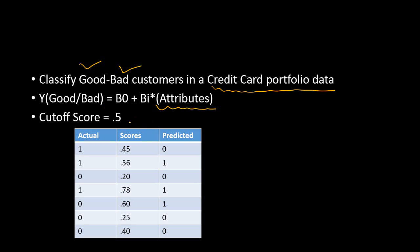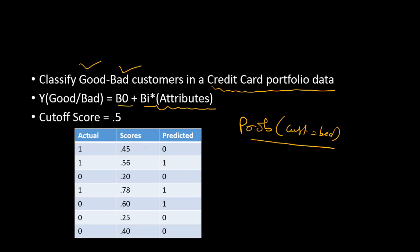Once you have built the model and scored your data, scoring means using your beta parameters and the customer attributes to find out the probability that a customer is bad. So the prerequisite for a confusion matrix is that we are building a classification model and once we have the model in place, we get the scores from the model.